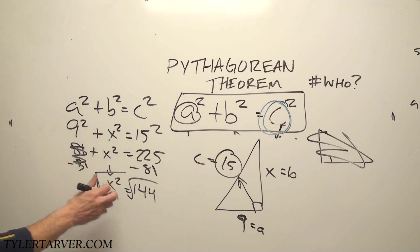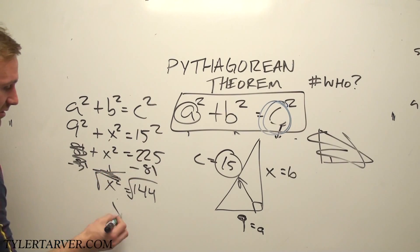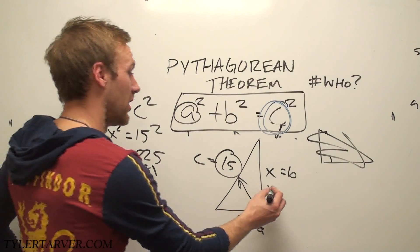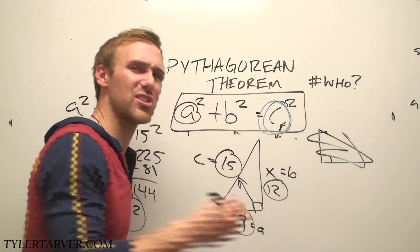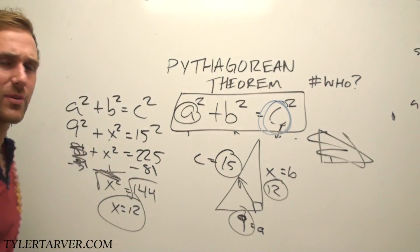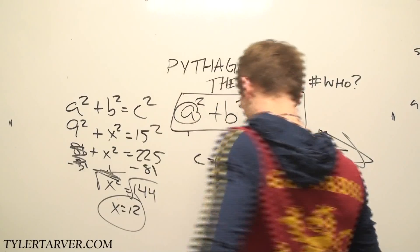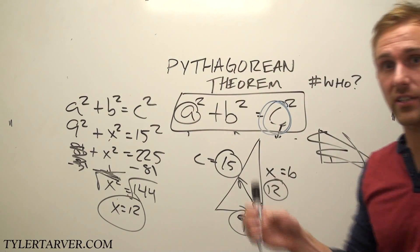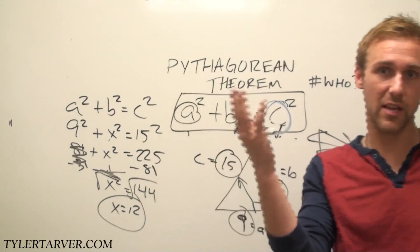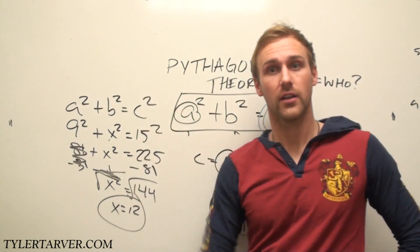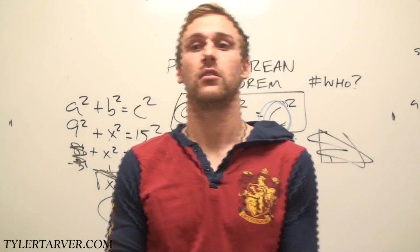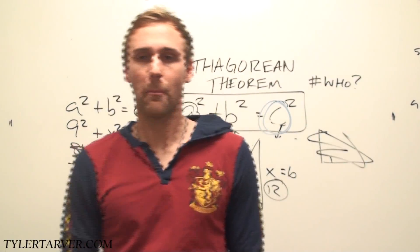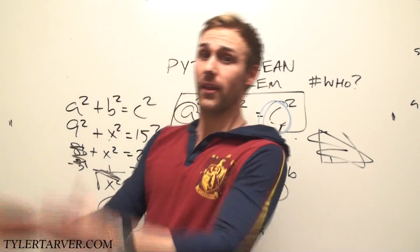The square root cancels out the squared. The square root of 144 is 12, and you've got your answer. Now, does 12 make sense? Ask yourself: 9, 12, and the hypotenuse is 15. Is the hypotenuse the longest? Check. Are they all in the same ballpark? Check. Is that the answer? Check. You just learned some math — Pythagorean Theorem. Bye.